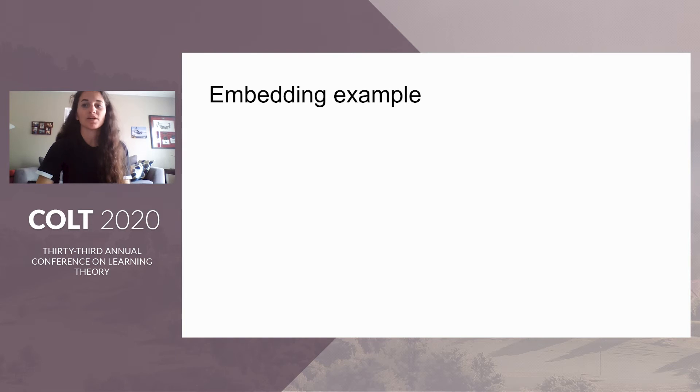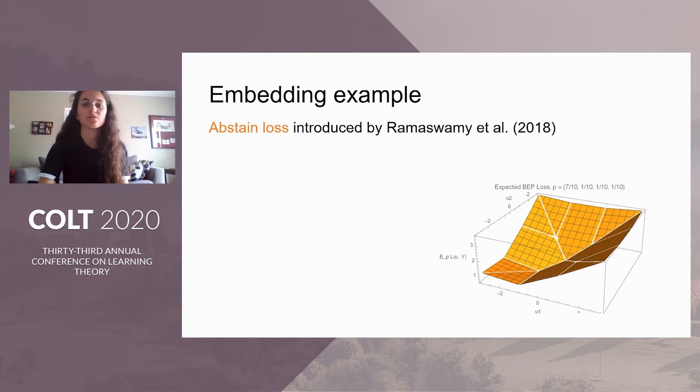One example of an embedding is the binary encoded prediction abstain surrogate introduced by Ramaswamy et al. in 2018. Their surrogate is a log n-dimensional generalization of hinge loss that embeds each of the outcomes into a corner of the plus minus one hypercube with an abstain report at the origin. In four outcomes, this is a two-dimensional loss where each of the reports goes to plus 1, 1, minus 1, 1, minus 1, minus 1, and 1, minus 1, with the abstain report being at the origin 0, 0.